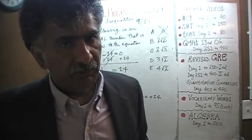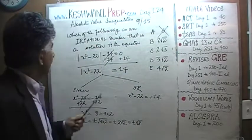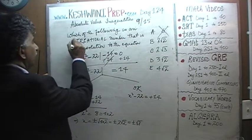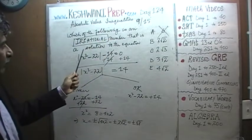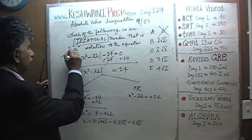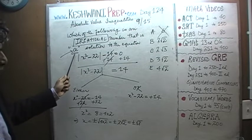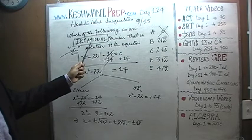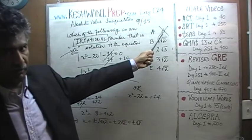Because the question says — let's read it one more time — which of the following is an irrational number? Notice it uses an indefinite article. The key point is that the answer must be an irrational number. The answer choice 6 is not an irrational number.